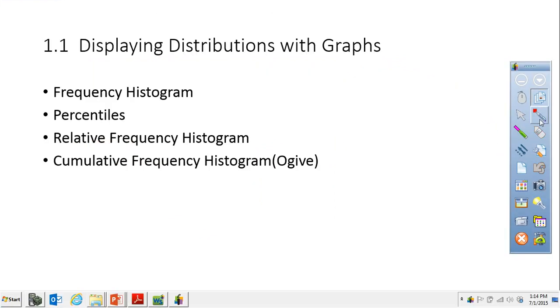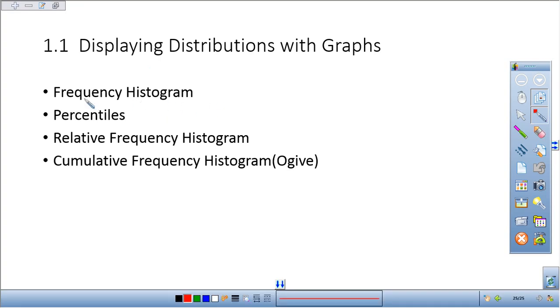So again, today's lesson here, really looking at the difference between a frequency histogram, which is a count, a relative frequency histogram, which is a proportion, which is going to give you some type of a percent, and a cumulative frequency histogram called an ogive, which is going to be able to help you see percentiles. So I hope this helped you out. As always, if you have any questions, don't hesitate to contact me, and we'll see you next time.